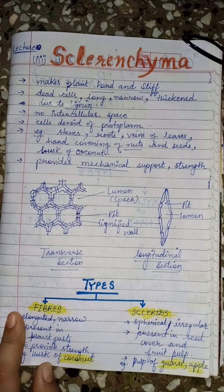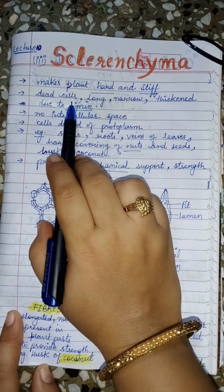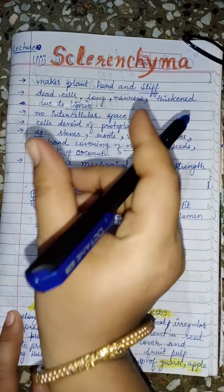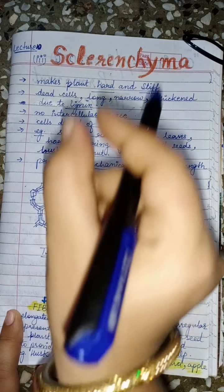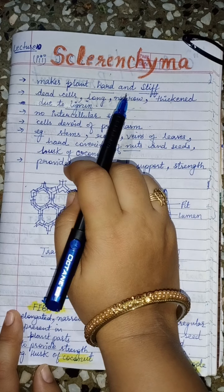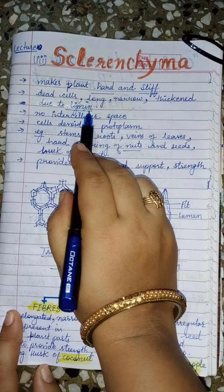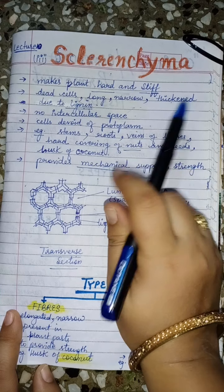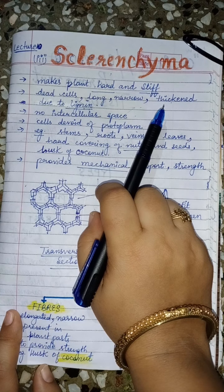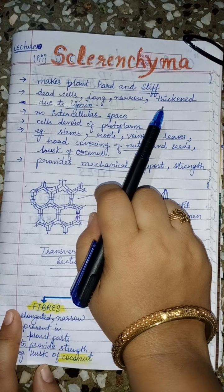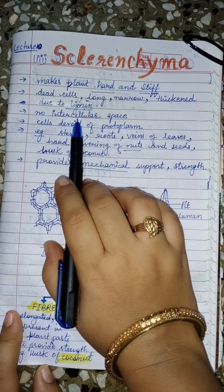The cells of sclerenchyma are dead — this is the most important point. The cells are long and narrow, thickened due to lignin. Lignin is a material like cellulose or hemicellulose that helps in providing strength to the plant. The cell walls are made up of lignin and are very thick. In parenchyma the walls were thin, in colenchyma thick at the corners, and in sclerenchyma the walls are thick throughout, as maximum strength is required.